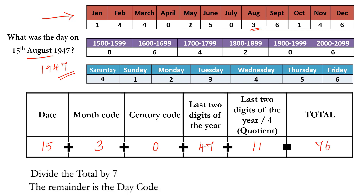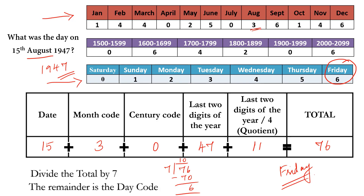We divide this total by 7: 76 divided by 7 gives a remainder of 6. The remainder is the day code. Looking at the day-of-week table, the value 6 corresponds to Friday. So 15th August 1947 was a Friday.